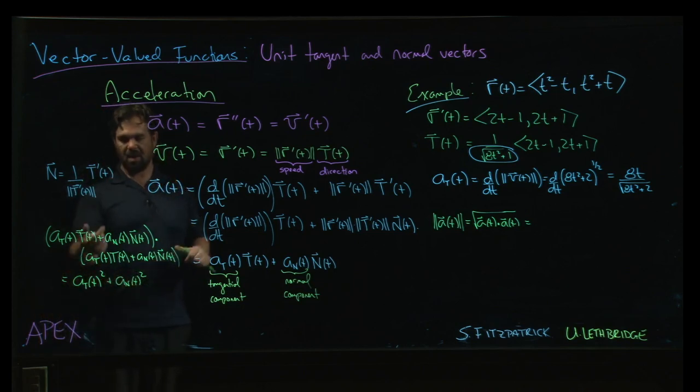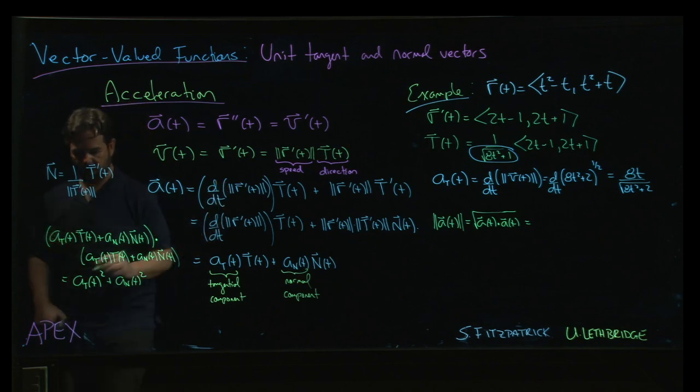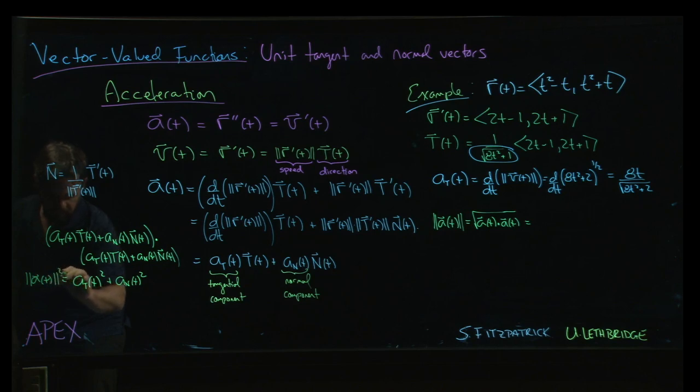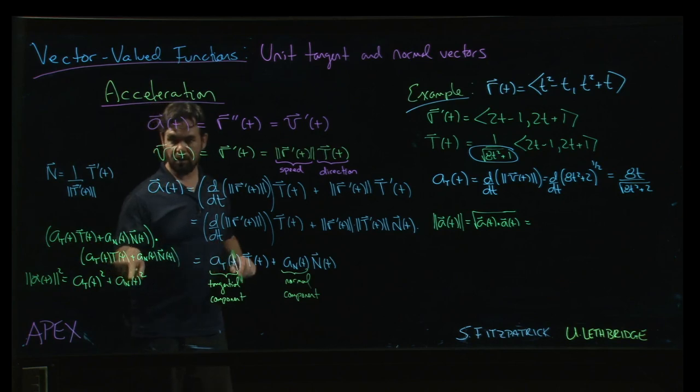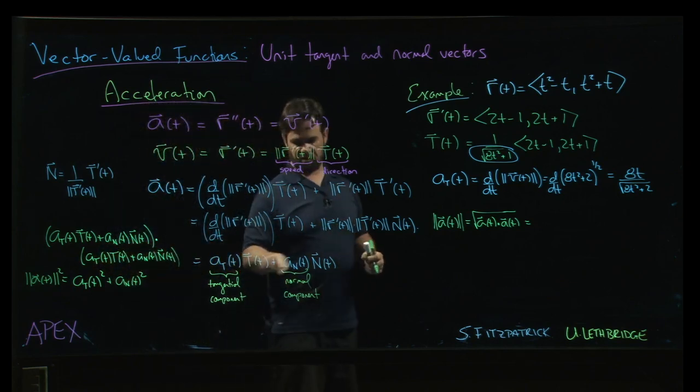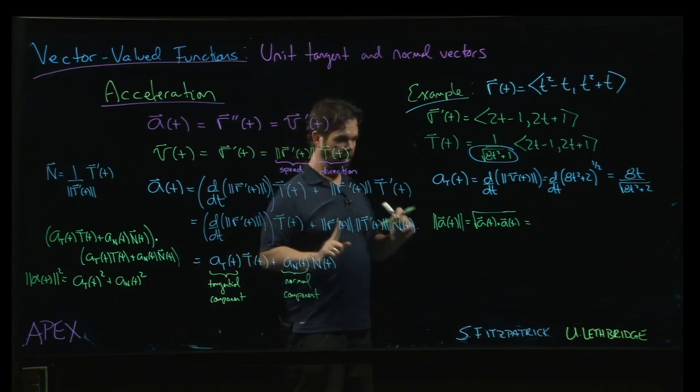So we get this really nice Pythagorean relationship. So the magnitude of the acceleration squared is the tangential component squared plus the normal component squared. And that only works because these two vectors are unit vectors and they're orthogonal, okay?